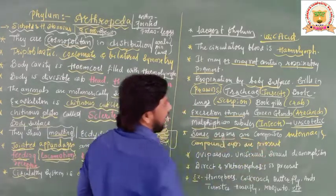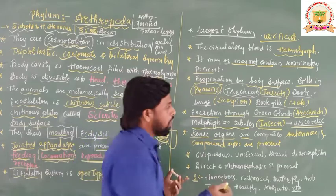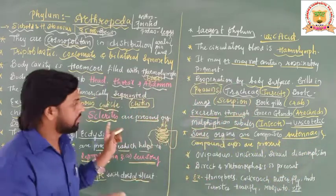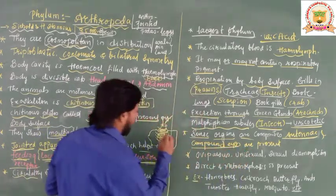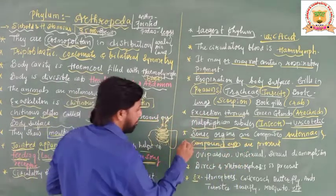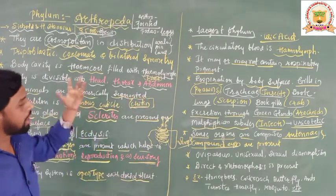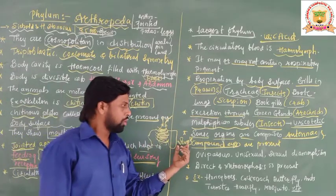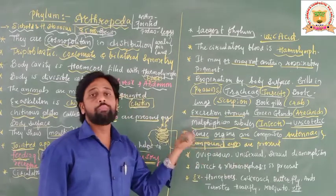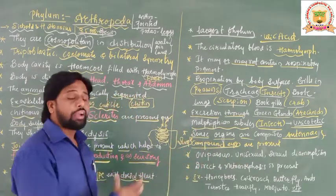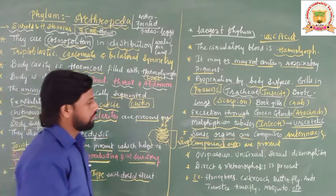Sense organs are well developed. Antennae act as sense organs — in cockroaches there are two antennae. They also have compound eyes or simple eyes; both types can be seen within the group of Arthropoda. Some animals show simple eyes while others show compound eyes, all acting as sense organs to perceive the surrounding environment.